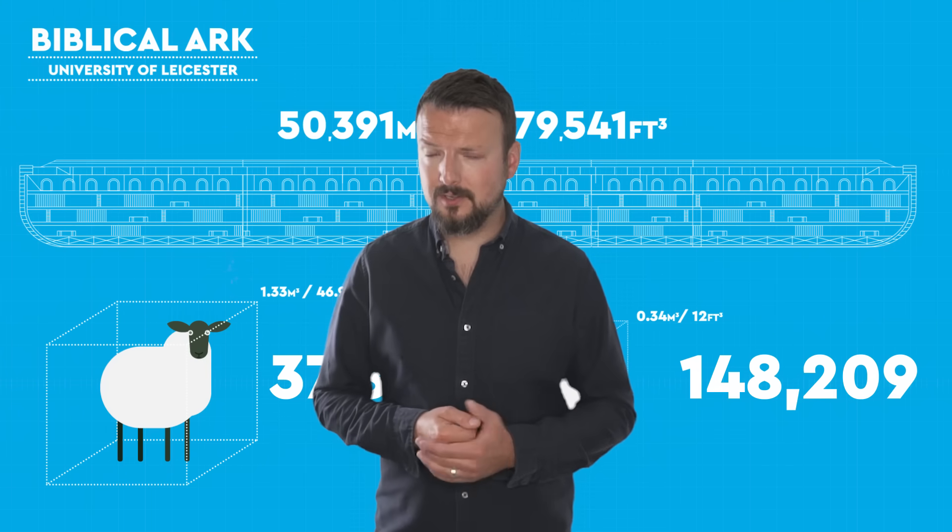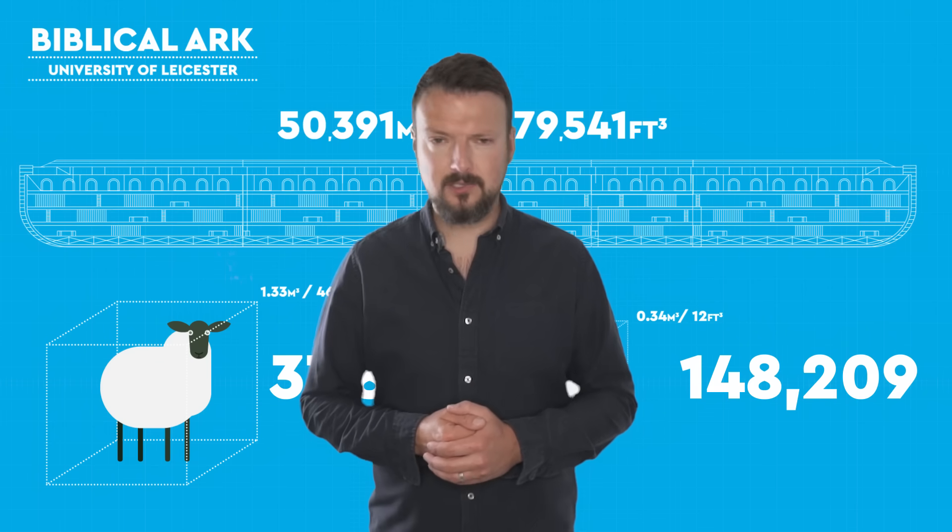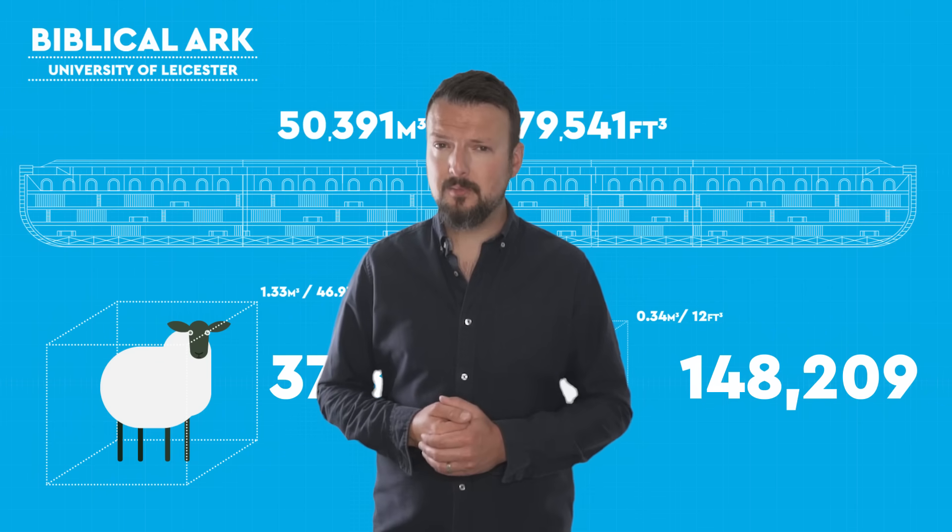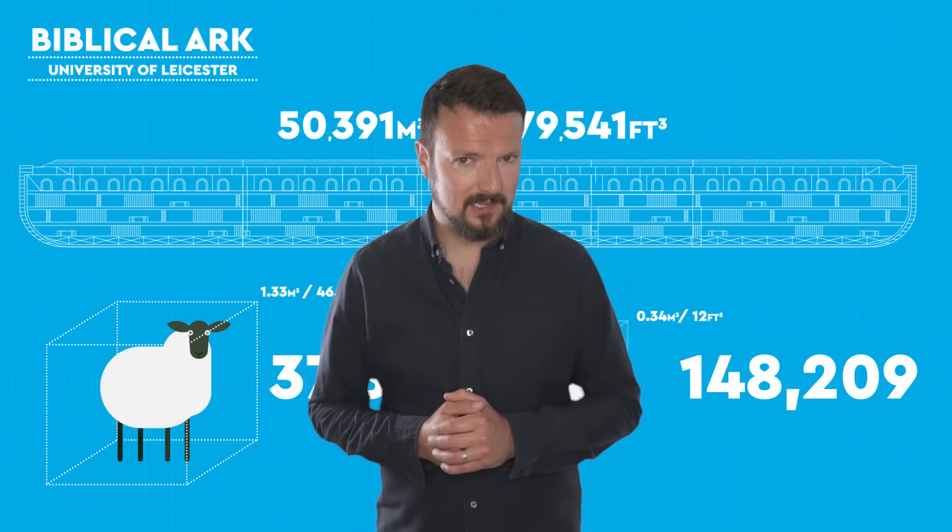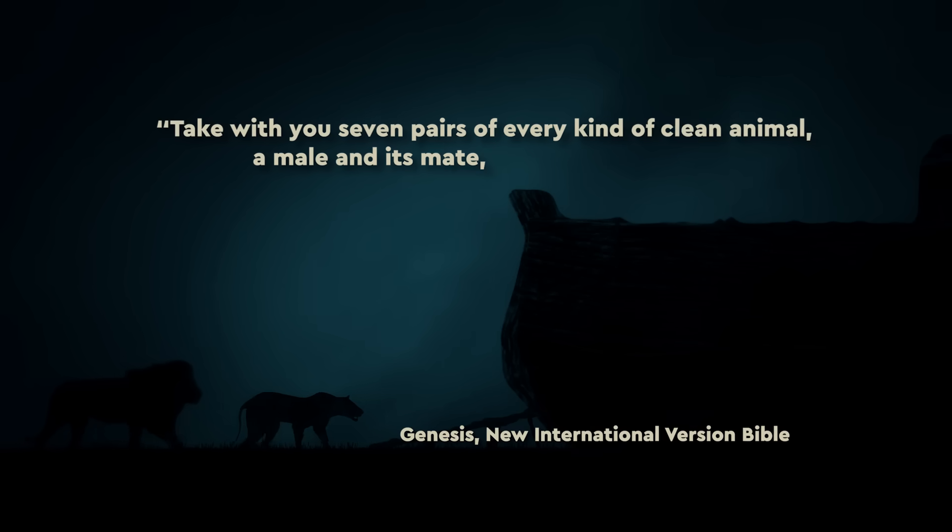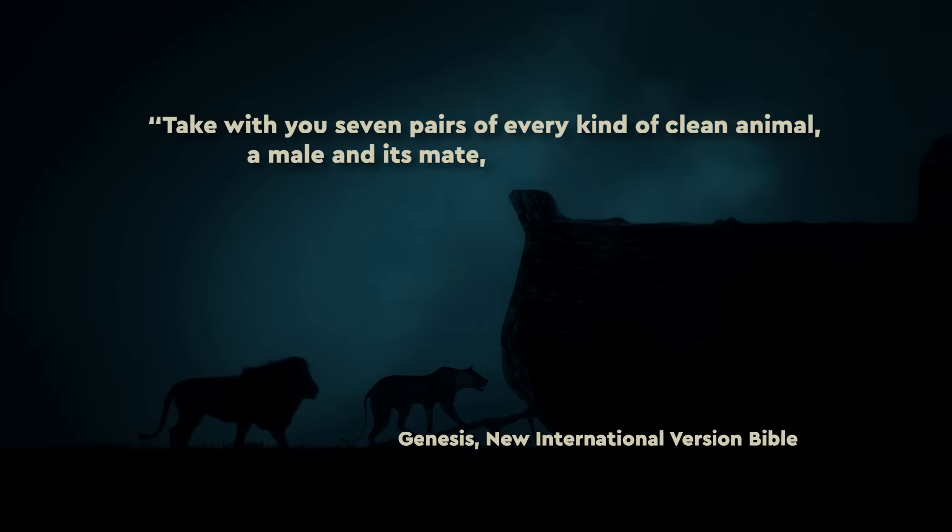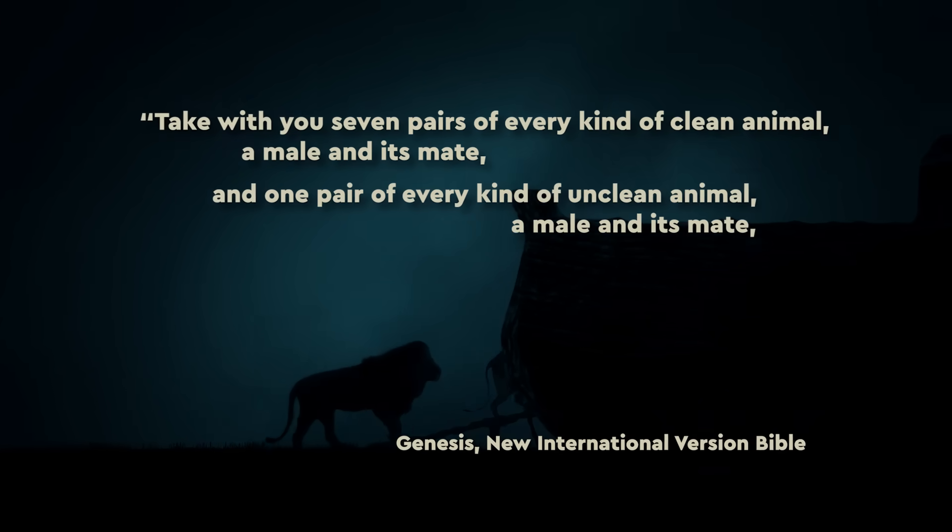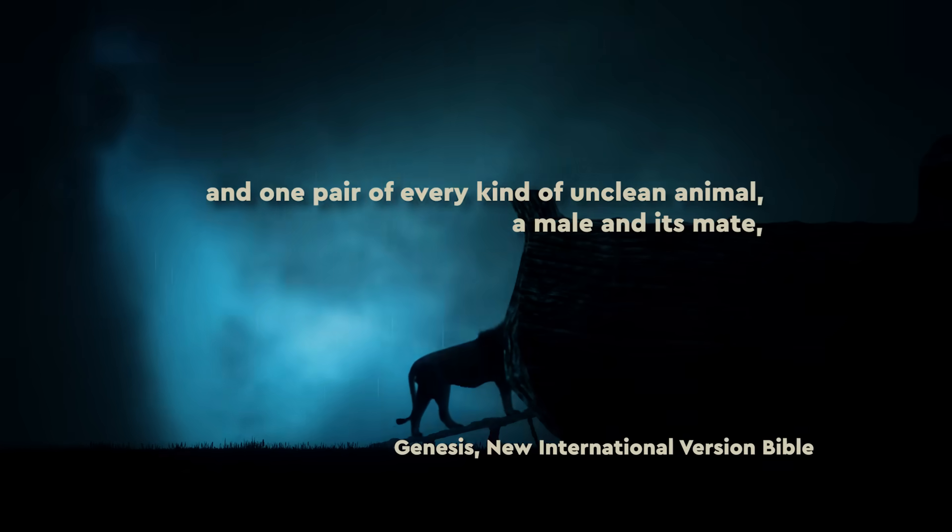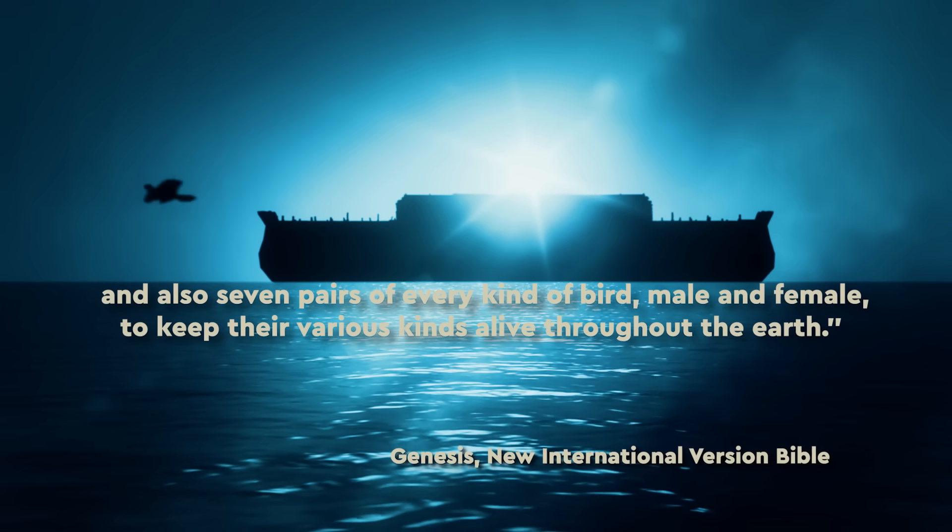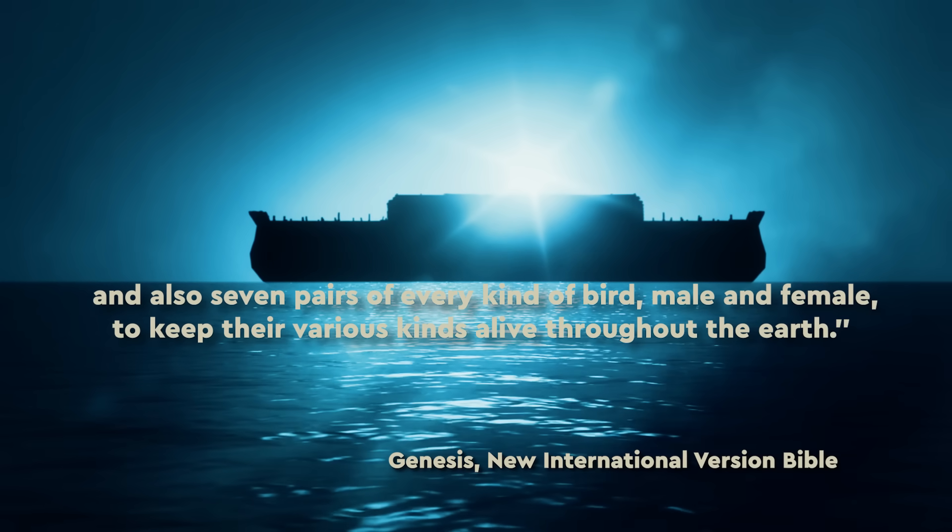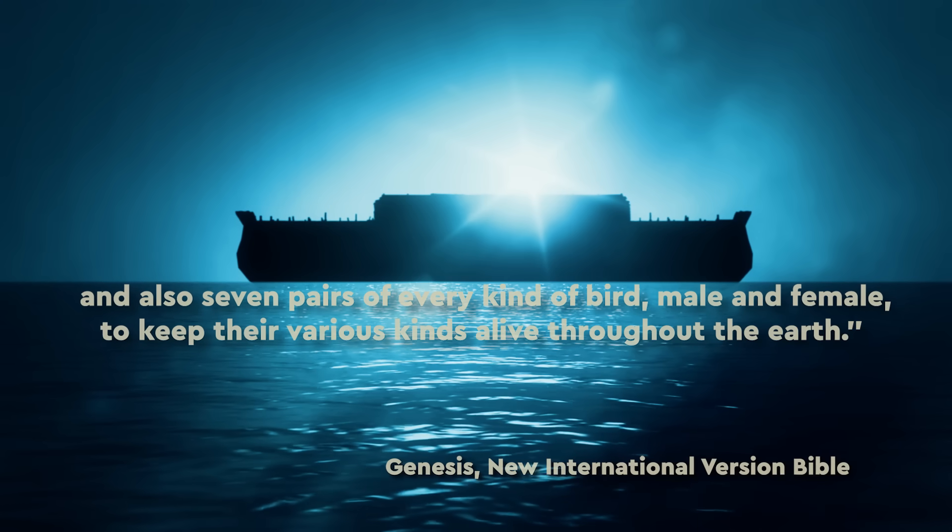All this begs the question, did Noah's ark have enough space to do the job? Now according to the Bible, God also laid down instructions about the number of animals he had to take with him. Take with you seven pairs of every kind of clean animal, a male and its mate, and one pair of every kind of unclean animal, a male and its mate, and also seven pairs of every kind of bird, male and female, to keep their various kinds alive throughout the earth.